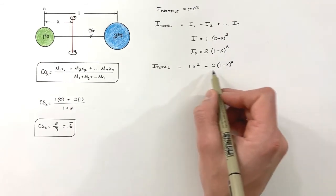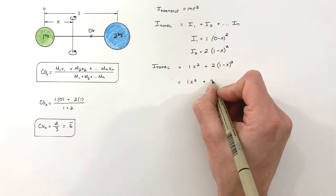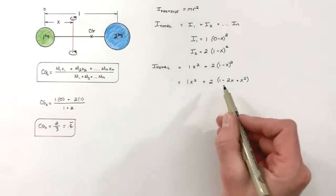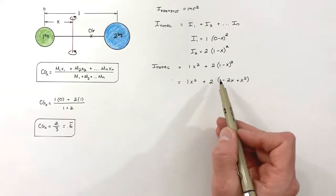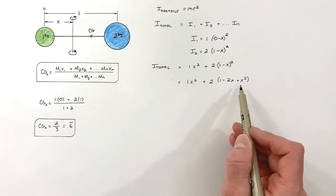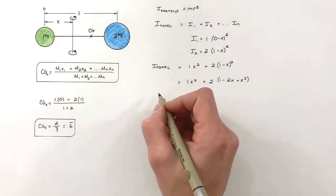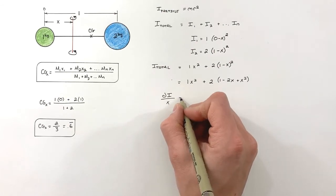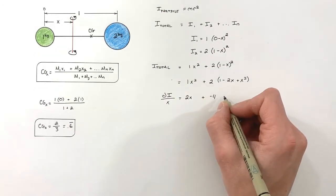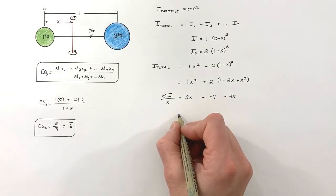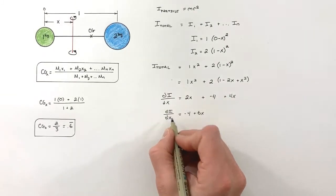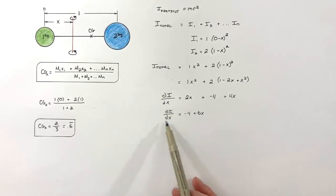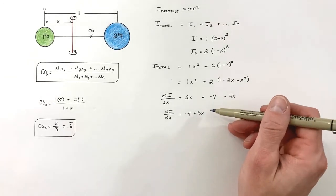In order to do that, I'm actually going to expand this out first and foil out the terms. I'm breaking this down so we can keep the calculus as simple as possible and just use the power rule. Taking the derivative of this function with respect to x and cleaning it up, we find that the derivative of I with respect to x works out to be negative 4 plus 6x.